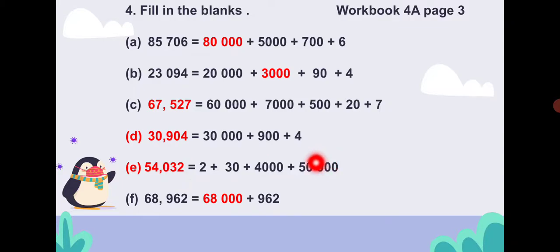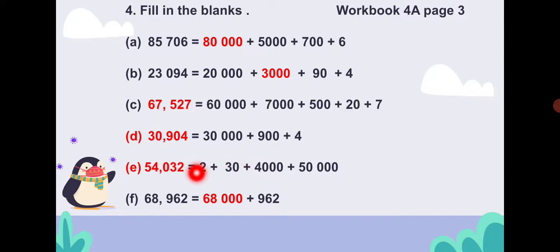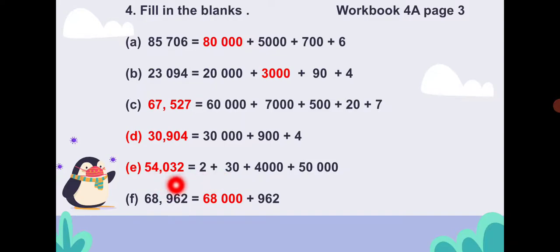We start with 10,000. So 54,032 — hundreds place is zero. Next, 68,962: 68 stands for 68,000 plus 962. So 68 comma — the numbers here include zero. That gives us 68,962.